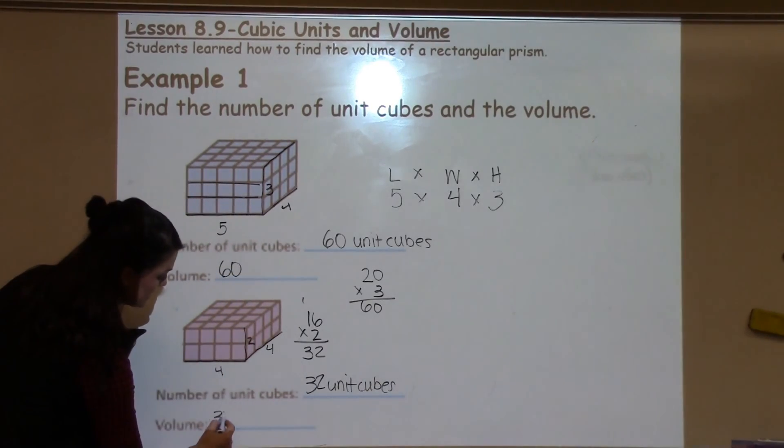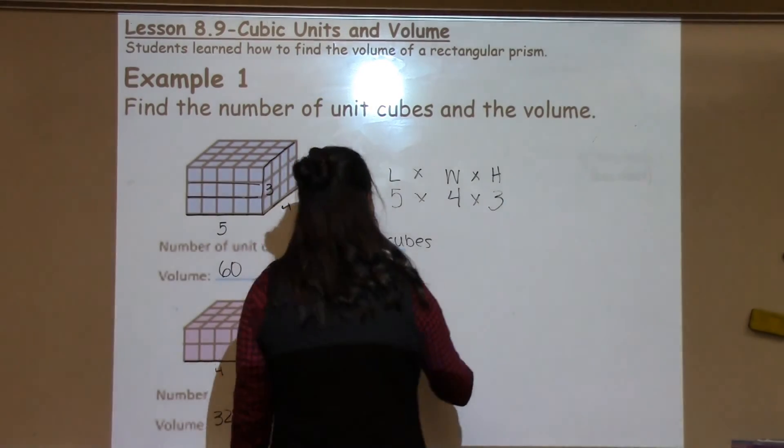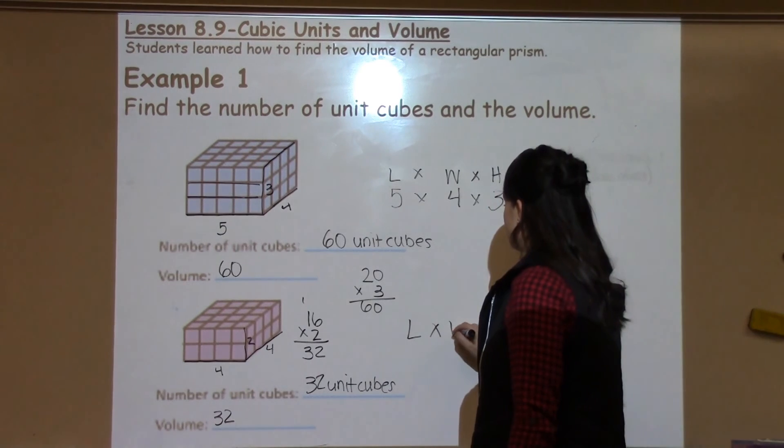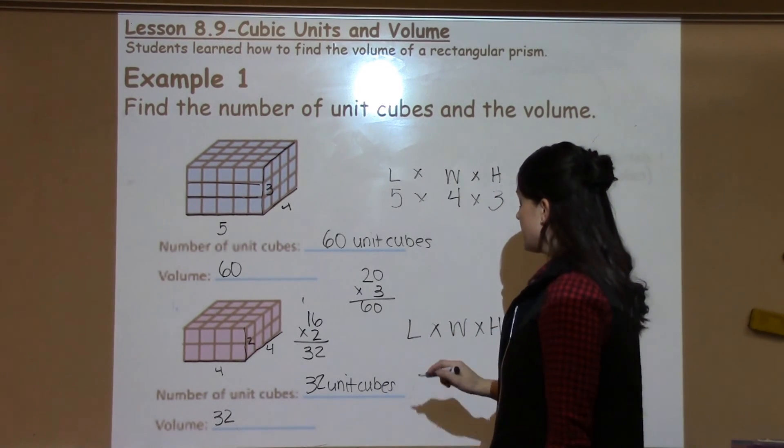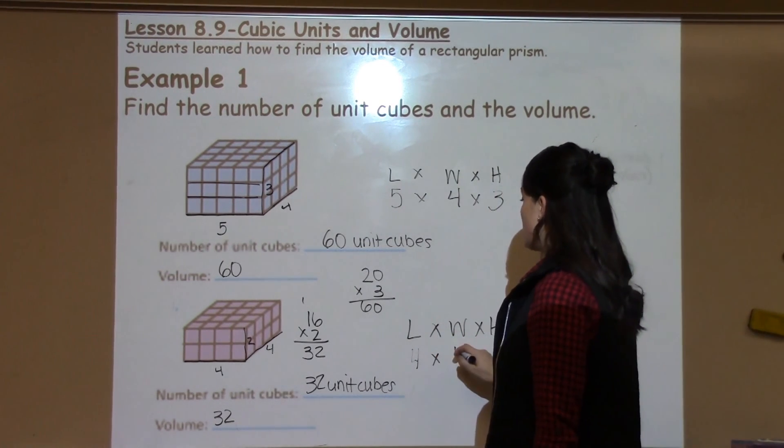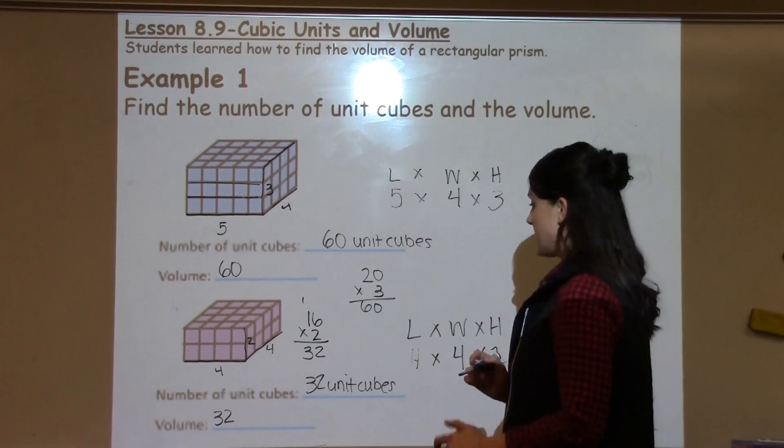Which would be the same answer as the volume because again volume is just length times width times height - the length is 4, the width is 4, and the height is 2.